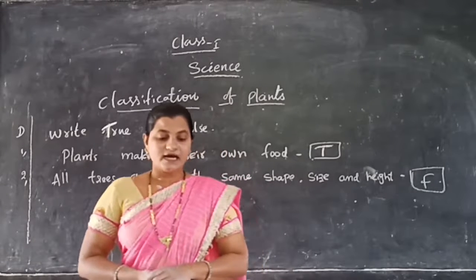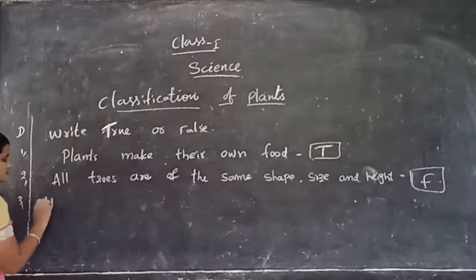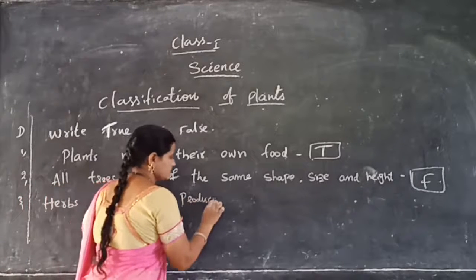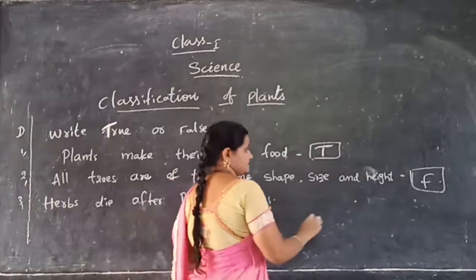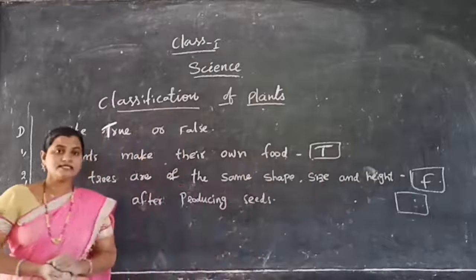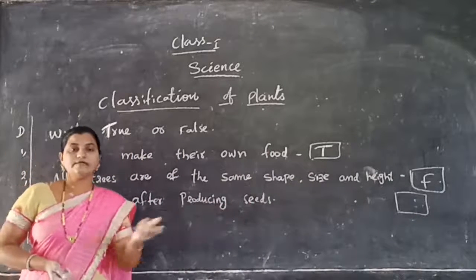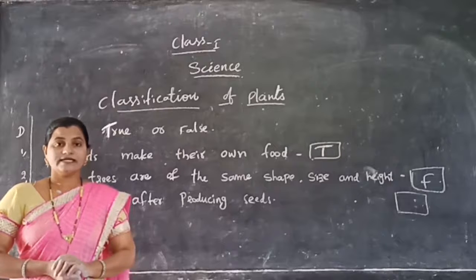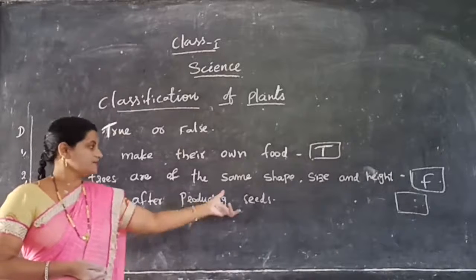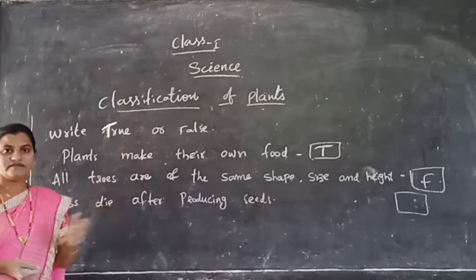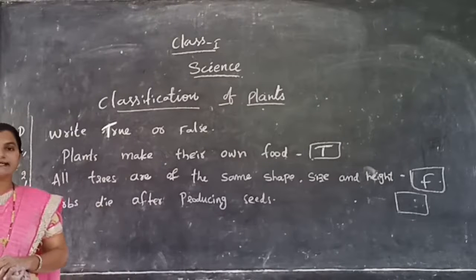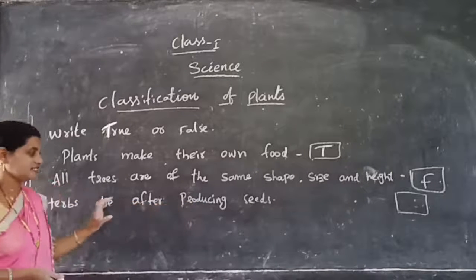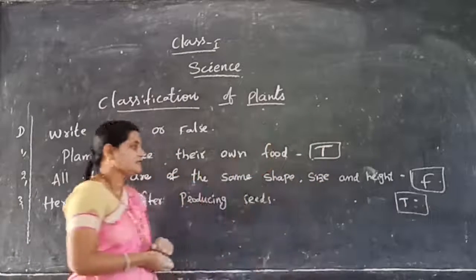Third statement: Herbs die after producing seeds. Already we know that herbs are very small plants with a short life period. At the end of their life they produce seeds and then they die. For example, honey, mint, and grass are known as herbs. Herbs die after producing seeds — so this statement is true. Write true.